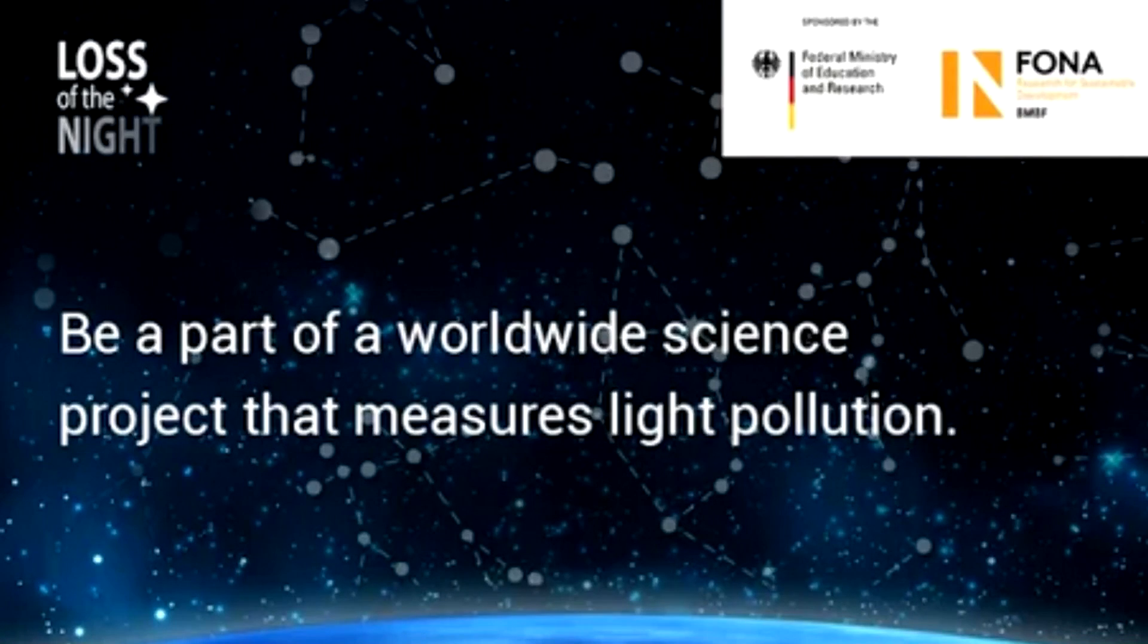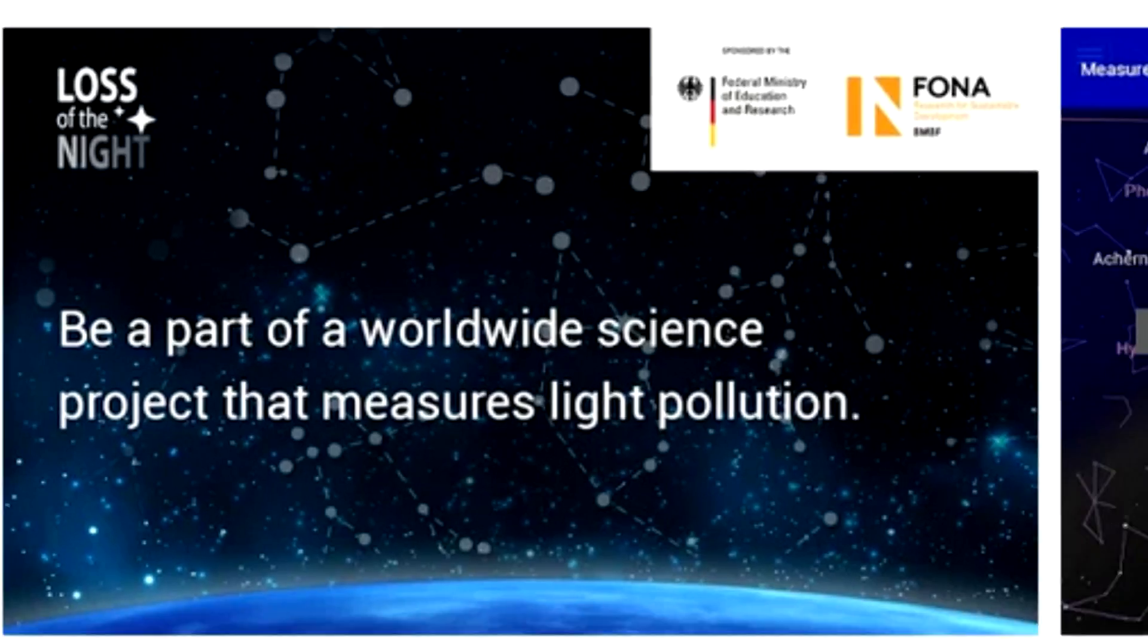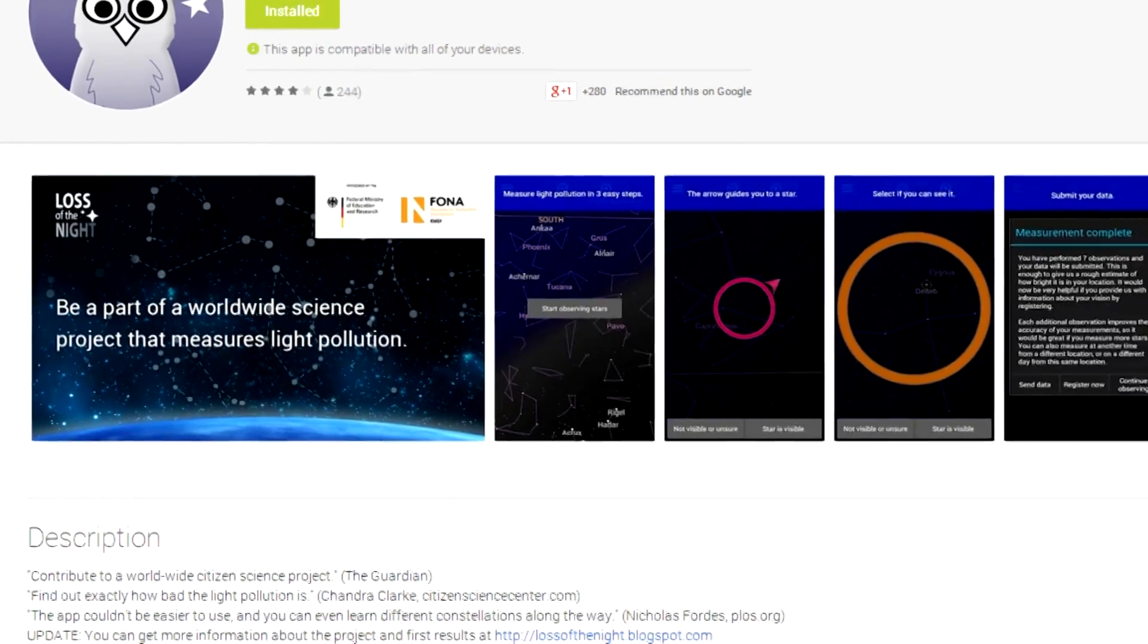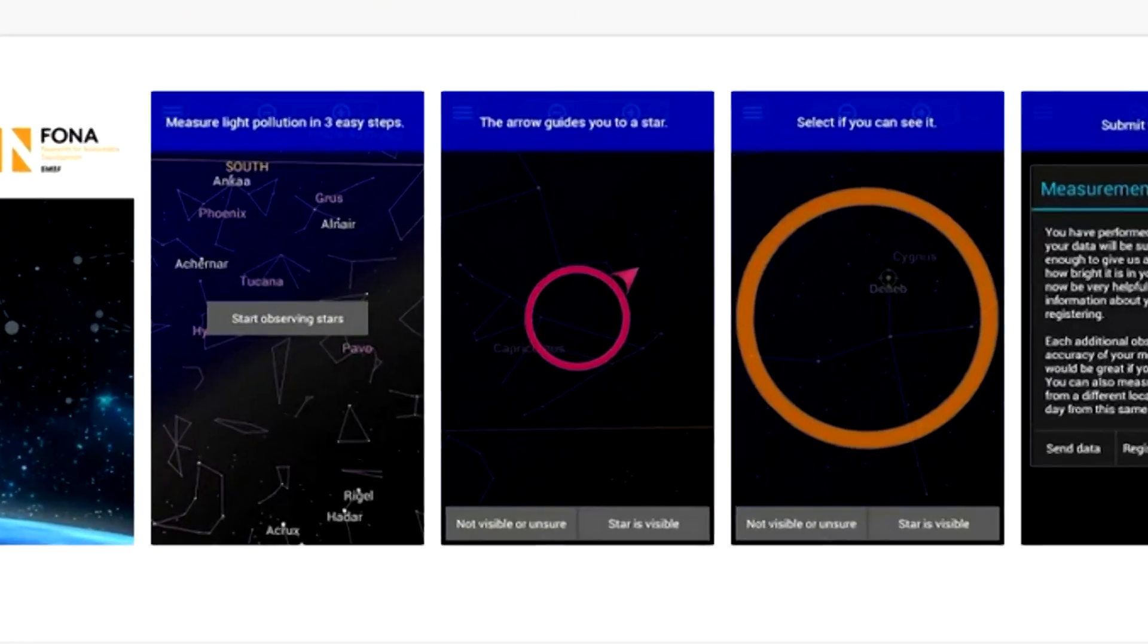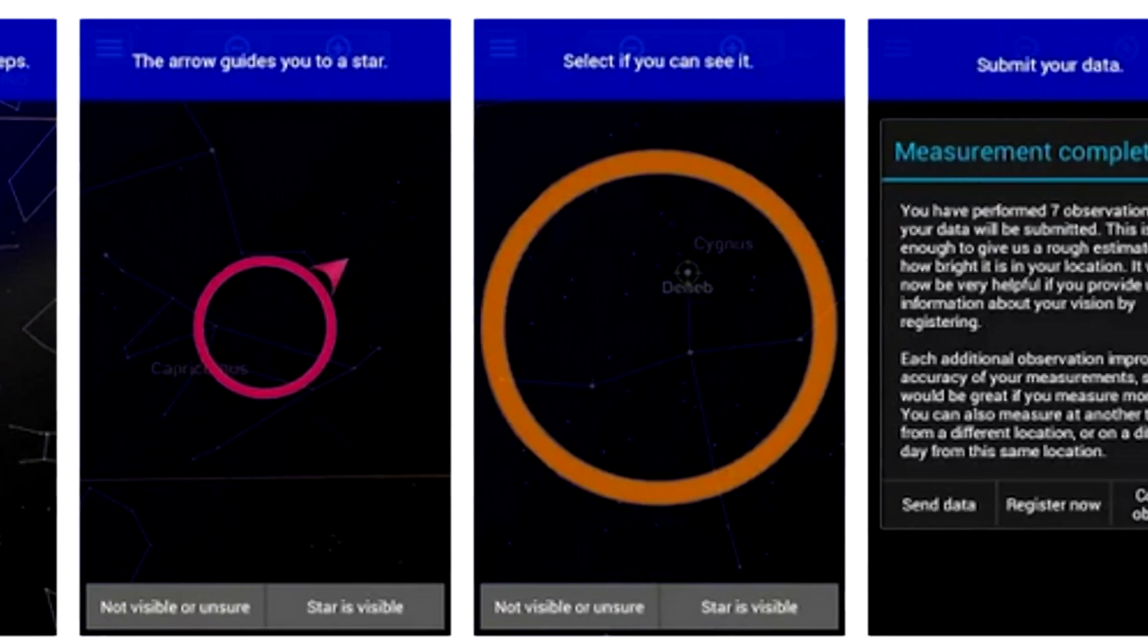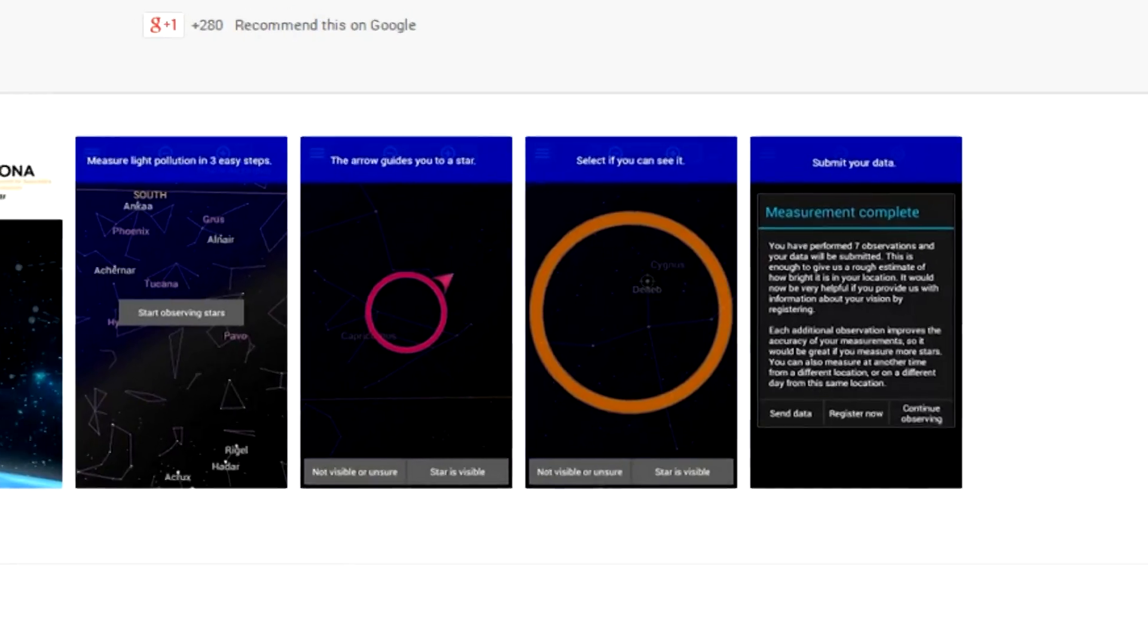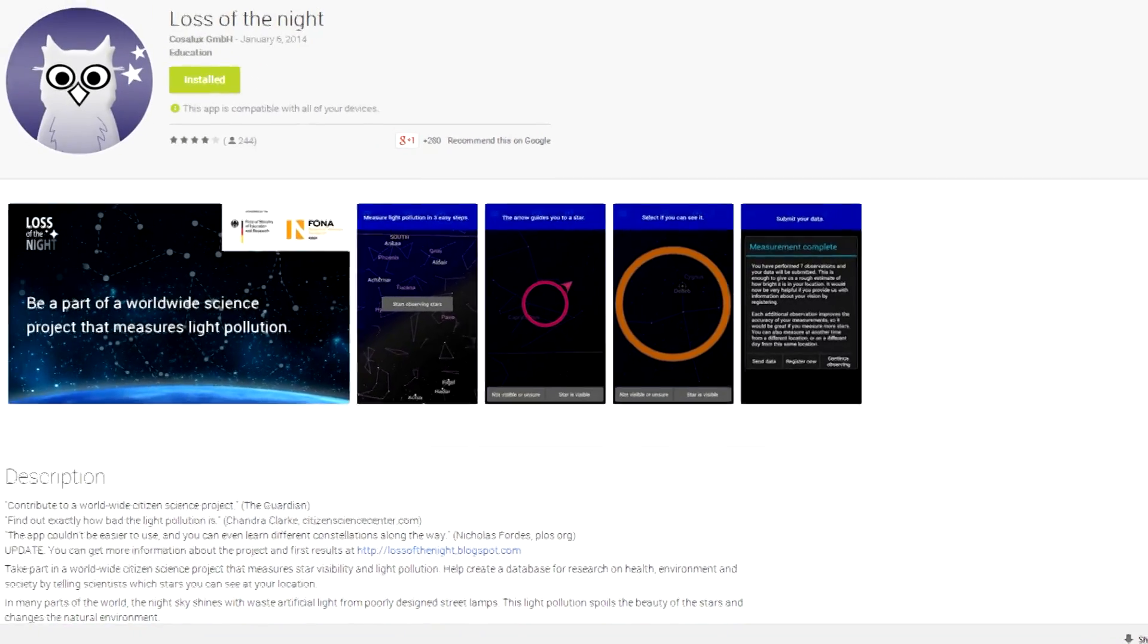And now this week's dark sky fact. Have you downloaded the Loss of the Night app to your smartphone? This free app from Globe at Night is simple to use. Let it know what brighter stars you can see, and finally, when you can no longer see the dimmer ones. That's it! And in so doing, you can help track light pollution. Try it out this week!